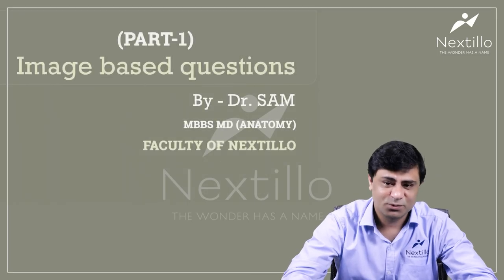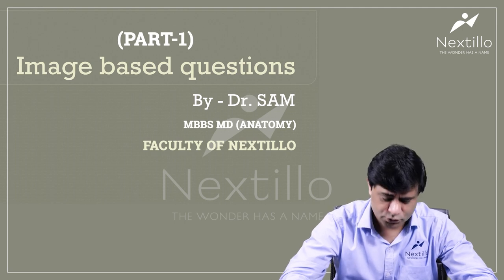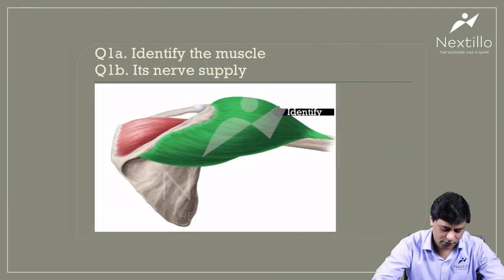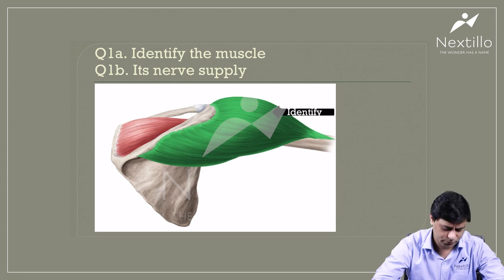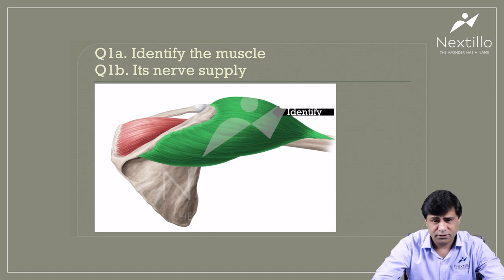Hello guys, I'm going to solve these image-based questions for you, so be prepared. Question number one is to identify this muscle — the green colored muscle — and tell me the nerve supply.